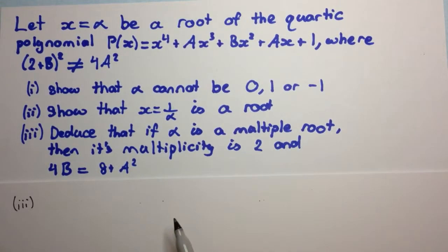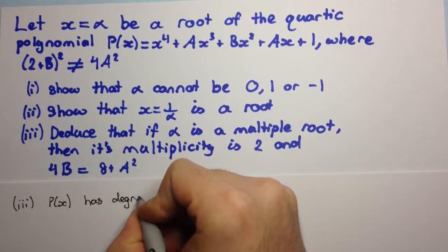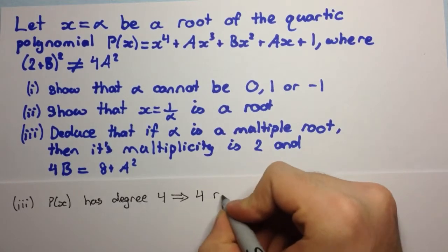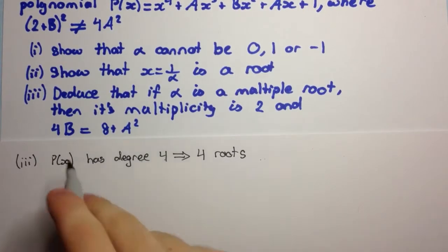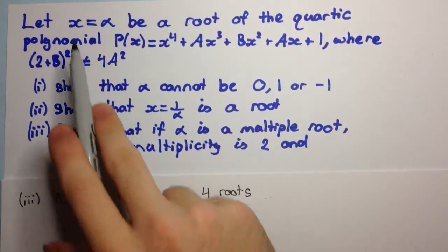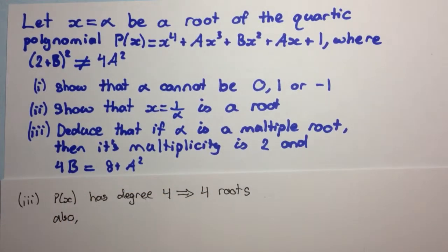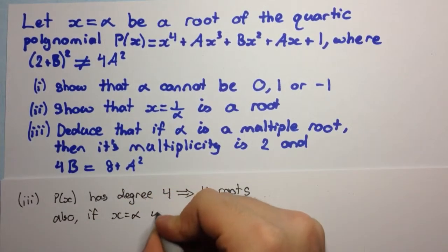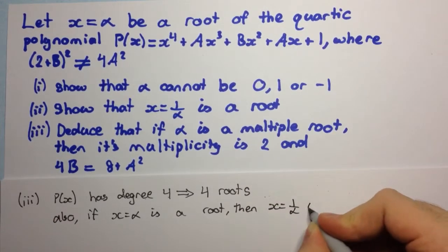If alpha is a multiple root, it can either be a multiple root of multiplicity 2, multiplicity 3, or multiplicity 4, because p(x) has degree 4 and so we expect 4 roots. Also, in part 2 we showed that every time x equals alpha is a root, x equals 1 over alpha is also a root.